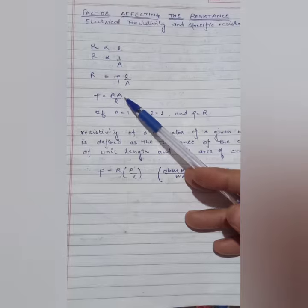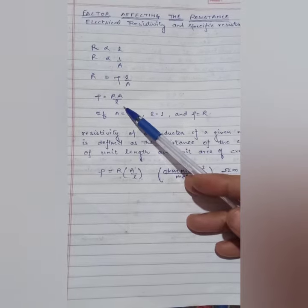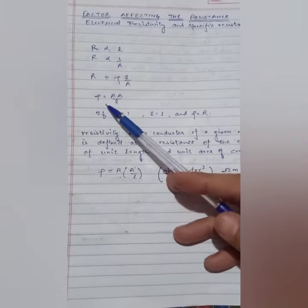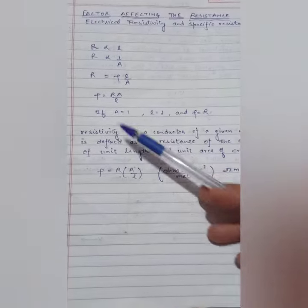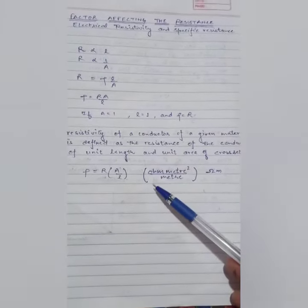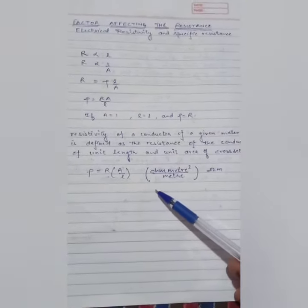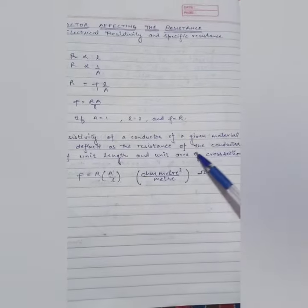If the value of A is one and the value of L is one, then the value of rho is equal to R. So the resistivity of a conductor of a given material is defined as the resistance of a conductor of unit length and unit area.